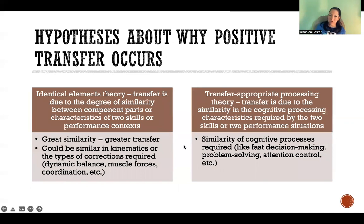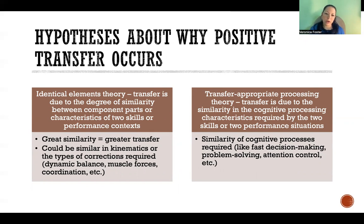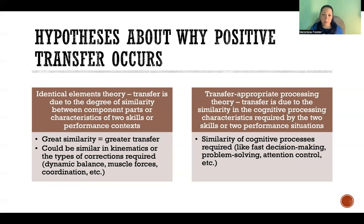Here are the two main hypotheses about why positive transfer occurs. First is the identical elements theory. The idea is that transfer is due to the degree of similarity between the component parts or characteristics. If the kinematics are similar between two skills — for example, the specific amount of flexion and extension, or something about the kinematics of the movement is similar enough — or if the types of corrections required for the two skills are similar, then positive transfer may occur.